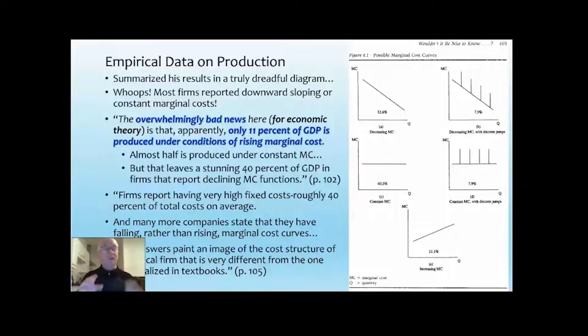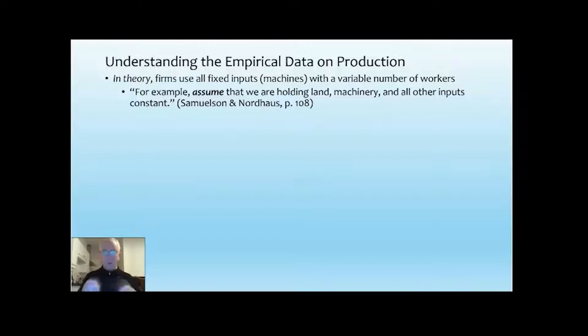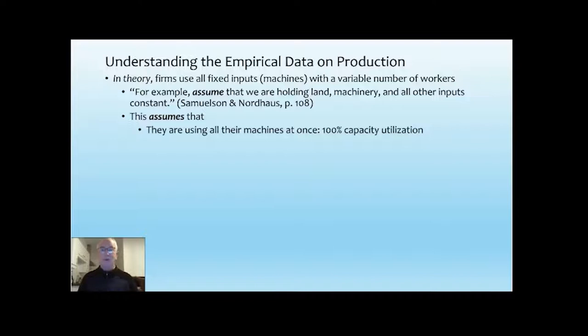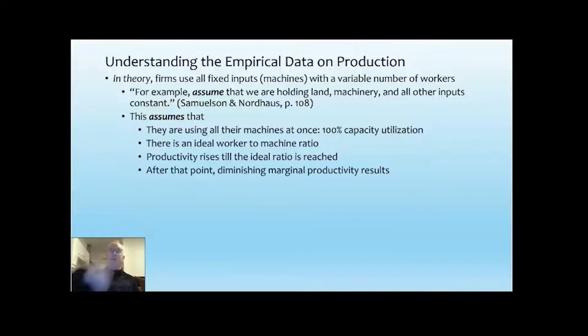In theory, why do you get rising marginal cost? It's because you have fixed inputs — machines — and a variable number of workers. Samuelson and Nordhaus assume you hold land, machinery, and all other inputs constant. What they also assume is that you use every last unit rather than using units in a perfect ratio — so you're assuming all your machines are turned on at once, 100%, but many being used below the ideal worker-to-machine ratio. Productivity will rise until you reach that ideal ratio, but beyond that point you'll have diminishing marginal productivity.